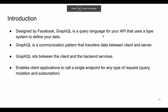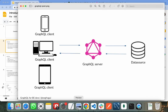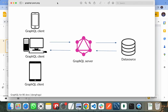GraphQL is designed by Facebook and is a query language for our API. In GraphQL we design our own data. GraphQL is a communication layer that transfers data between client and server — it sits between our client and our backend services. All the GraphQL clients connect through this single API layer that sits between the client and the backend services.